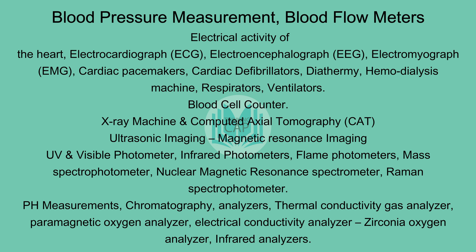Biomedical instrumentation covers: blood pressure measurement, blood flow meters, electrical activity, ECG, EEG, electromyograph, cardiac pacemakers, cardiac defibrillation, diathermy, hemolysis, blood cell counter, X-ray machine, ultrasonic imaging, UV and visible spectrophotometers, infrared analyzers, Raman spectrometer, pH measurement, chromatography analysis, thermal conductivity gas analyzer, paramagnetic oxygen analyzer, electrical conductivity analyzer, and Zirconia oxygen analyzer.